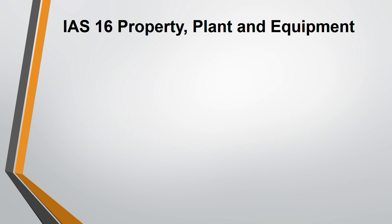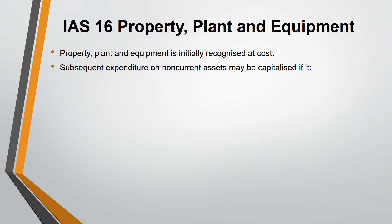Initially you recognize property, plant and equipment at cost — there is no choice. Initially at cost only. But for subsequent measurement you have a choice: either you can measure it at cost or you can measure it at fair value.